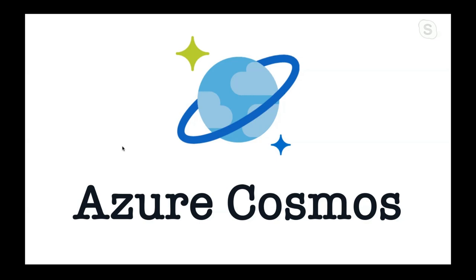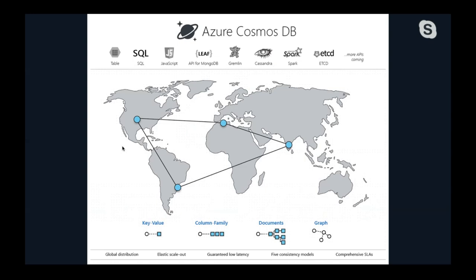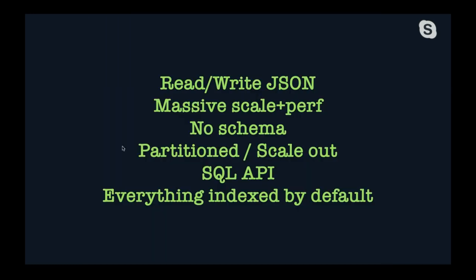Specifically, I'm going to talk about Cosmos, Azure's NoSQL database product. It's globally distributed, a document store with a fantastic ability to scale out — distributing and copying data between different regions. As a developer, the important bits are: you read and write JSON, it has massive scale and performance, it's schemaless compared to SQL, it scales out via partitioning, it has a SQL API, and everything is indexed by default, which is pretty unique to Cosmos.